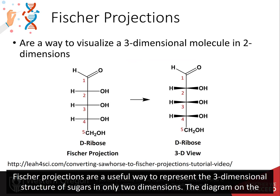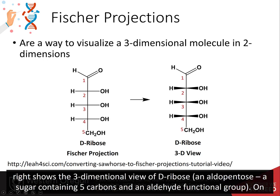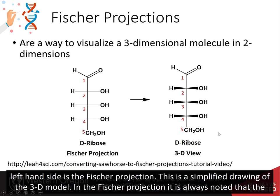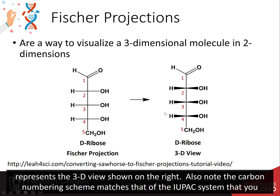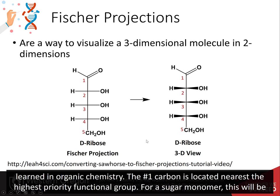Fischer projections are a useful way to represent the three-dimensional structure of sugars in only two dimensions. The diagram on the right shows the three-dimensional view of D-ribose, an aldopentose containing five carbons and an aldehyde functional group. On the left-hand side is the Fischer projection, a simplified drawing of the 3D model. In the Fischer projection, the horizontal bonds are always in the orientation where they are coming out of the plane of the paper towards the viewer. Also note that the carbon numbering scheme matches that of the IUPAC system.